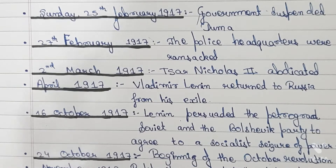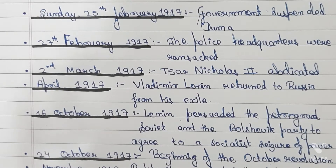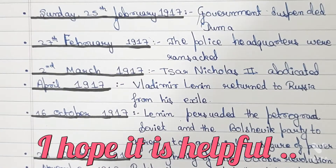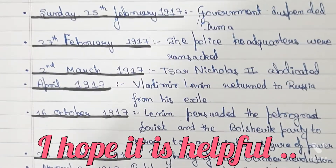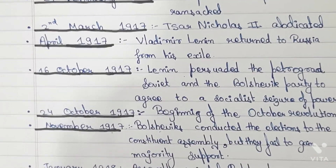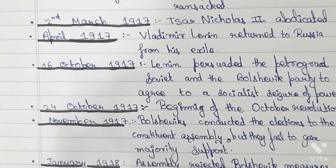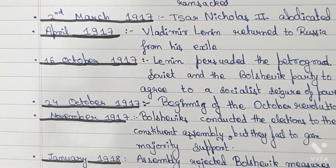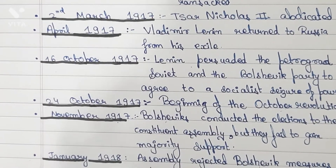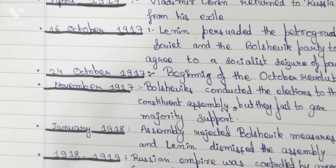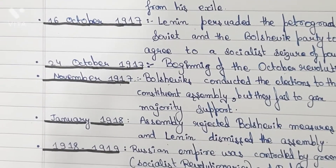2nd March 1917: Czar Nicholas II abdicated. April 1917: Lenin returned from his exile. 16th October 1917: Lenin persuaded the Petrograd Soviet and the Bolshevik Party to agree to the socialist seizure of power.